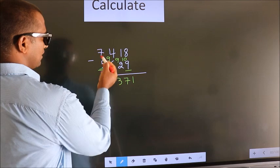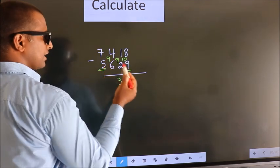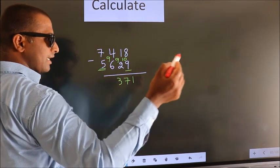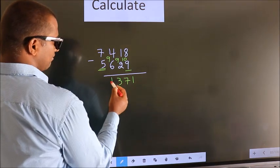Now for the first digit we do 7 minus 5, we get 2. Decrease more by 1, we get 1.